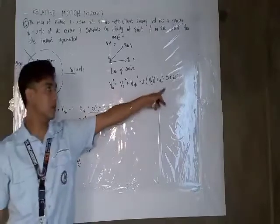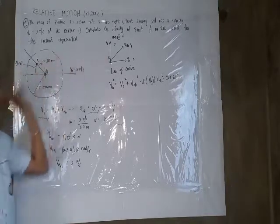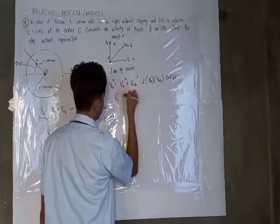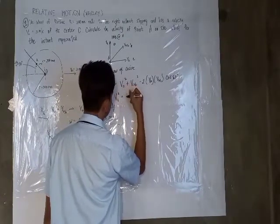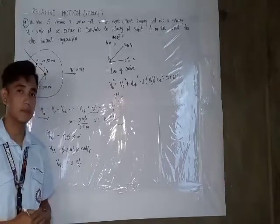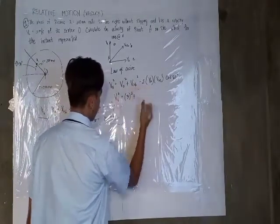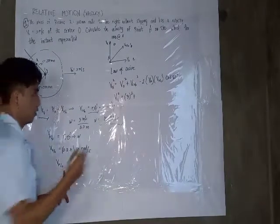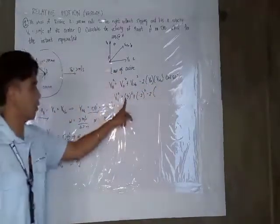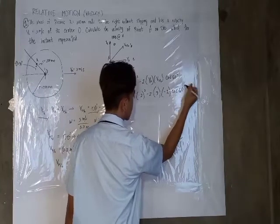You may wonder why we use cosine of 60 degrees. Since theta equals 30 degrees, and due to the rotation, the angle is doubled — so the effective angle becomes 60 degrees. Evaluating the formula: V_A squared equals 3 squared plus (negative 2) squared minus 2 times 3 times (negative 2) times cosine 60 degrees.